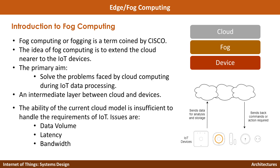Bandwidth is another issue. Some protocols are not capable of transferring large amounts of data. If you can do processing at the fog layer, the number of available technologies for your IoT system design becomes larger, because you don't have to eliminate low-bandwidth communication protocols just because you can't send data to the cloud over them.